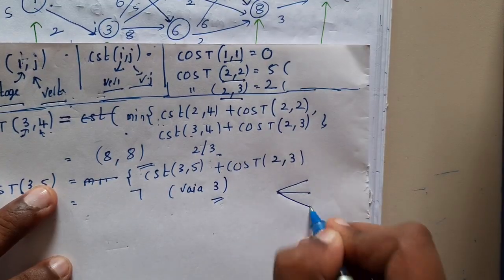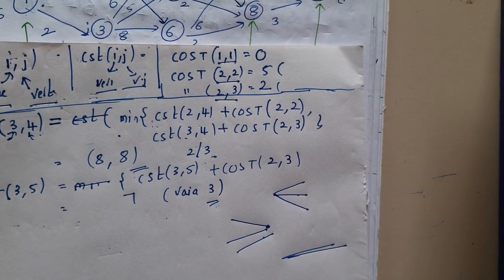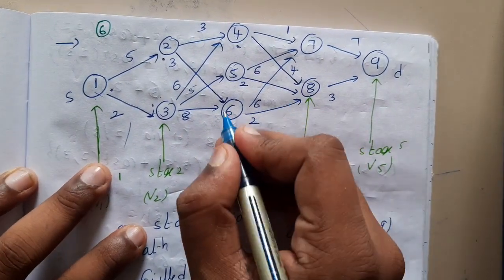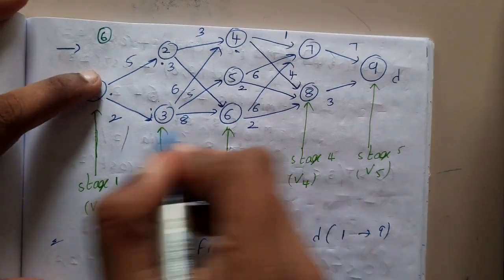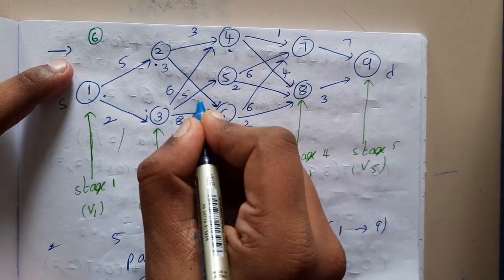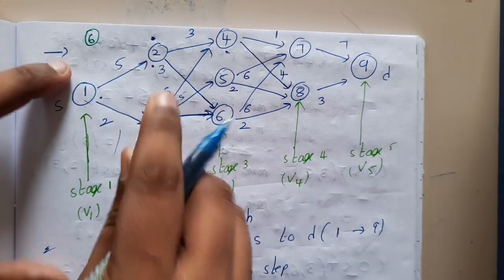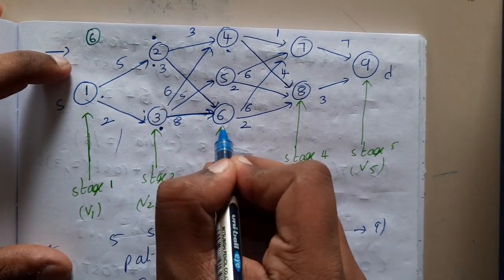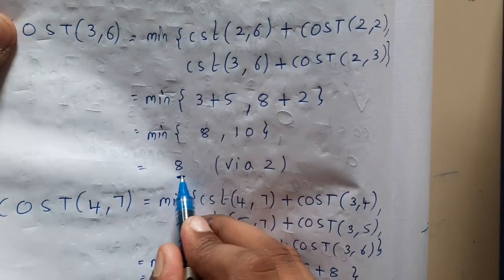Previously in the forward approach you looked at how many paths go out from one point; now in the backward approach you look at how many paths come into a point. This is the key difference between forward and backward approach. For vertex six, there are two incoming edges. We already know the costs of vertices 2 and 3, so we add the edge distances to those known costs. The two values are 8 and 10 — minimum is 8, so via vertex 2.